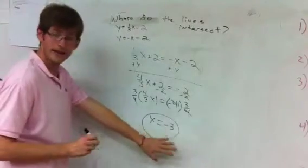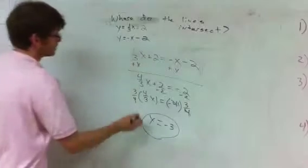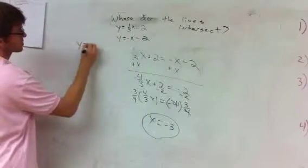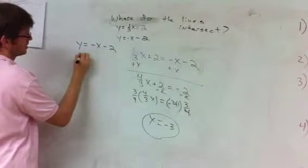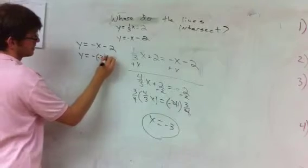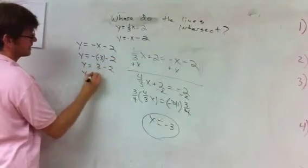Once we find x, we plug that back into the equation to find the y point. So now we come up here, and it doesn't matter which equation you pick. I'm going to pick the first one. So y equals negative x minus 2. Y equals negative negative 3 minus 2. Y equals 3 minus 2. Y equals 1.